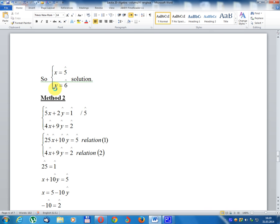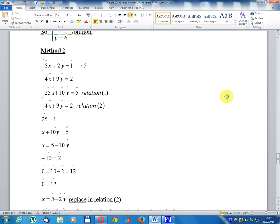Method 2: Multiply the first equation by 5: 25x + 10y = 5 (relation 1). 4x + 9y = 2 (relation 2).